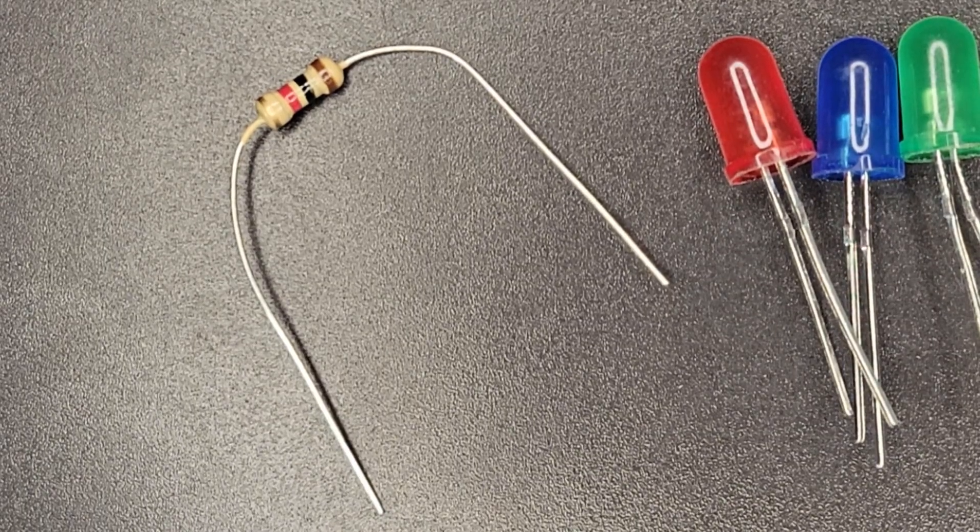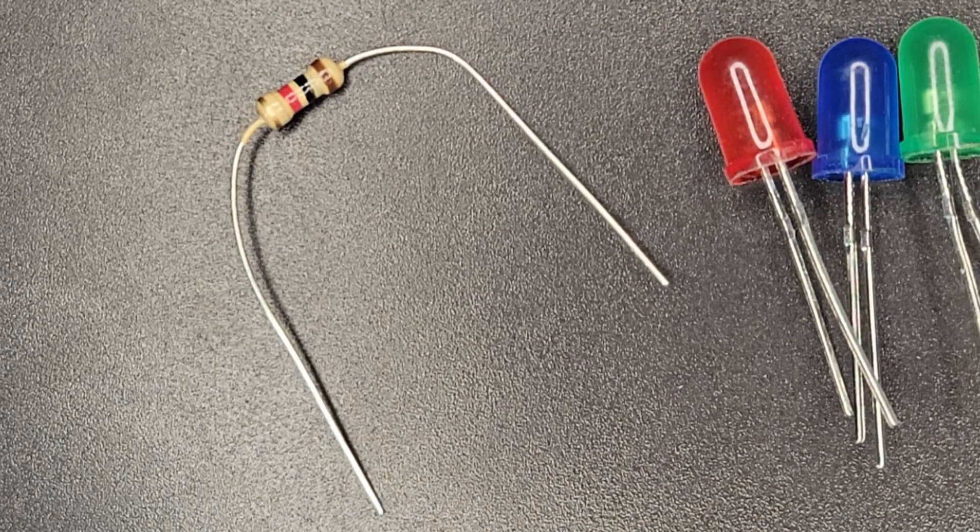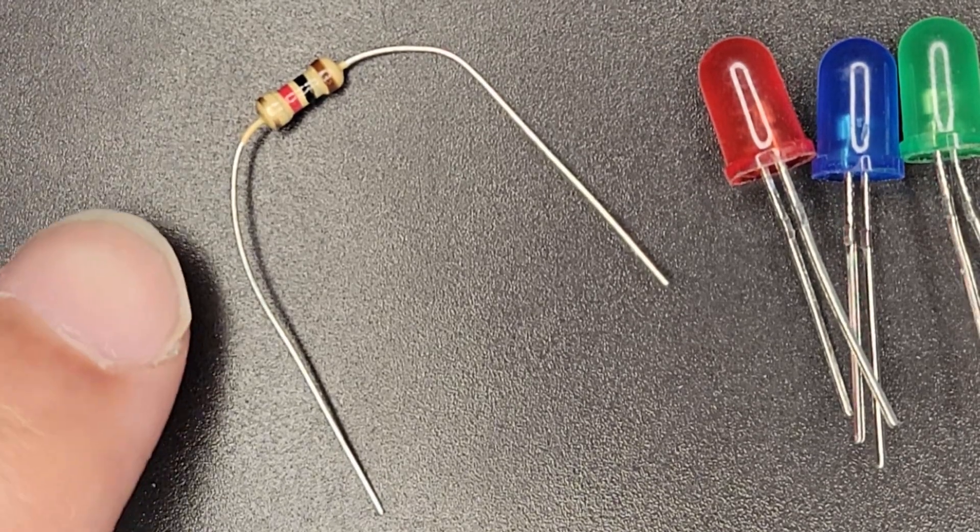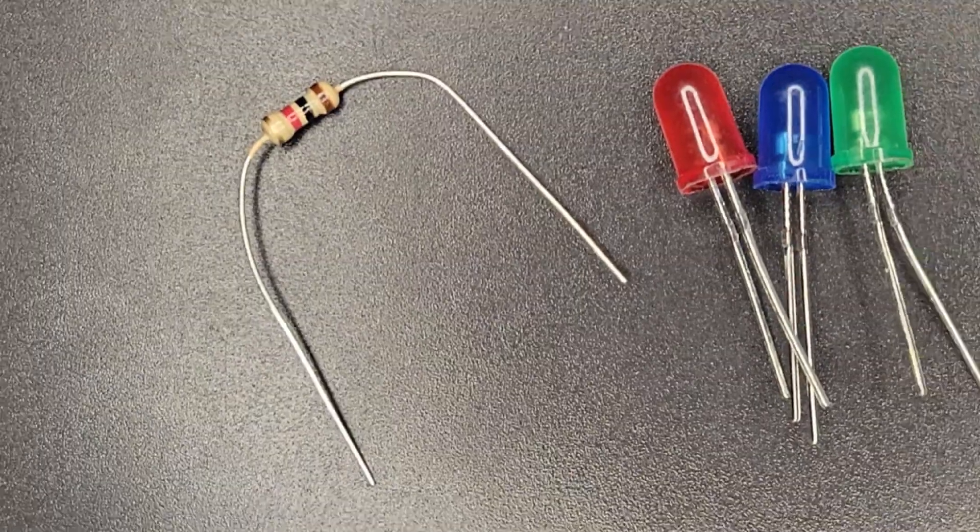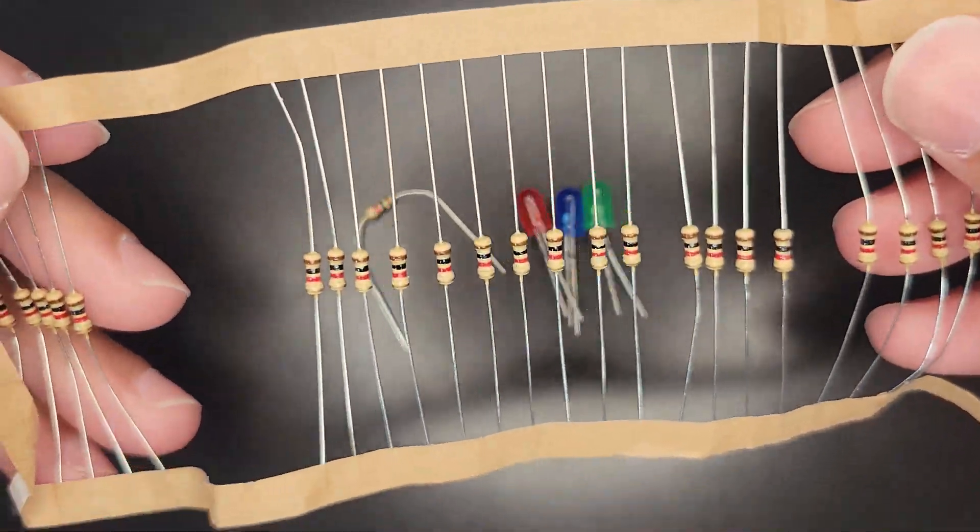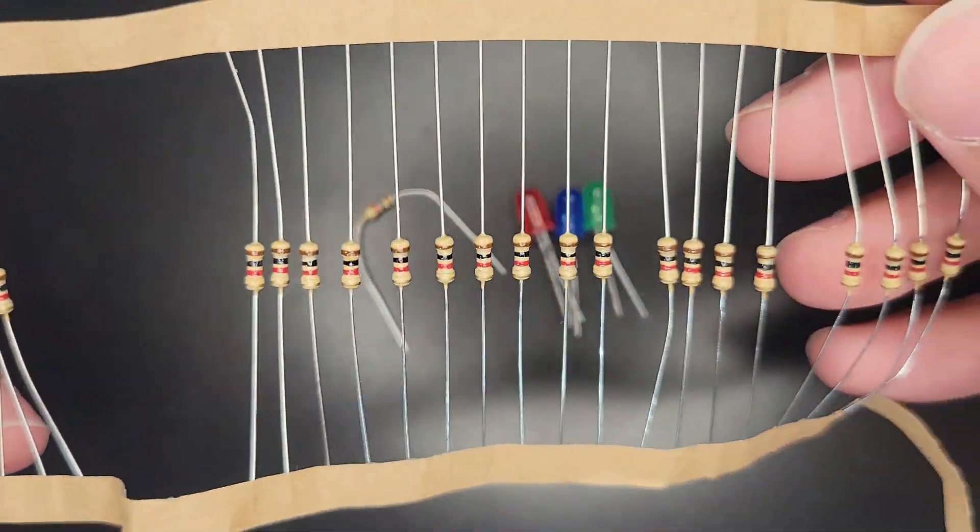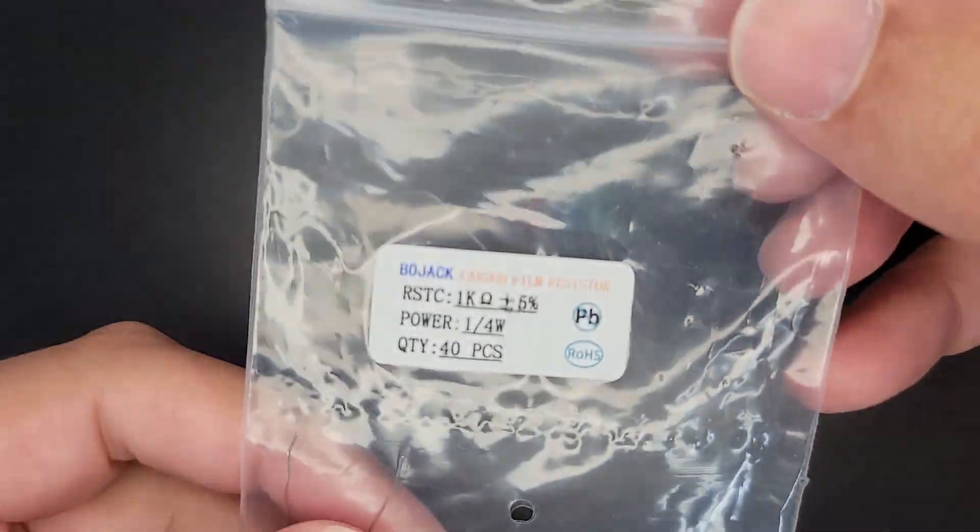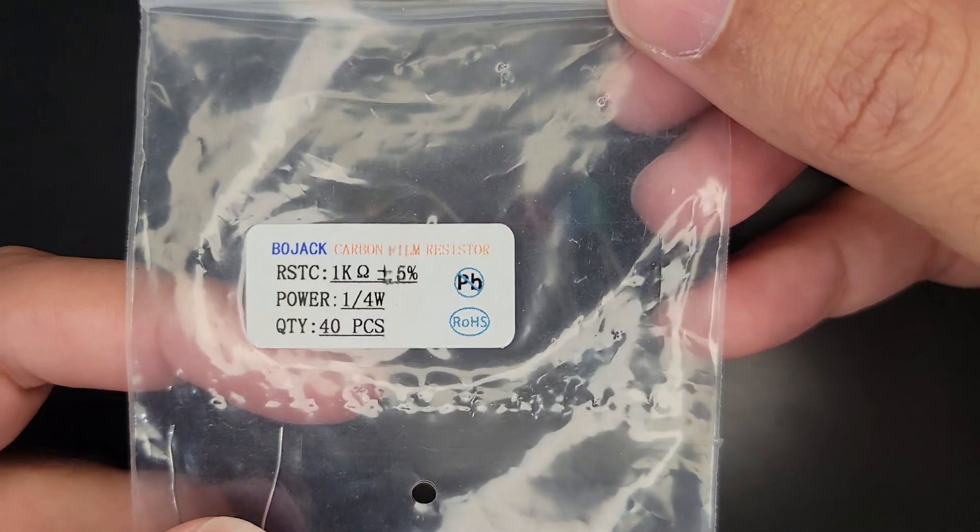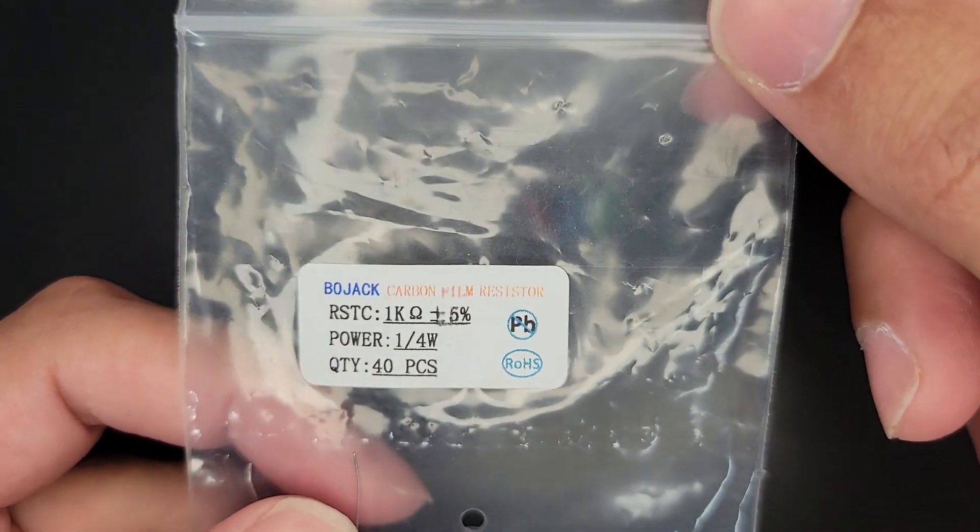I used a 1000 ohm resistor in this video, also called a 1k resistor. You can see it here on the left. This is one without the legs cut and they come like this in a little band where you just kind of tear them out and use them. This is a brand that I was using, but any 1000 ohm resistor will work for this. Even different values will work.